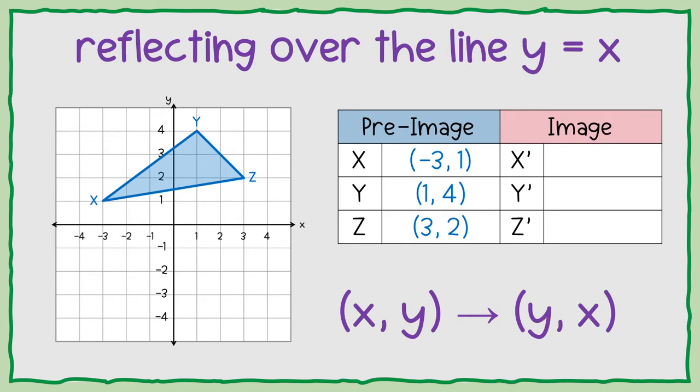Now, y equals x is the diagonal line, let's use yellow, is the diagonal line this way, diagonal line going up.